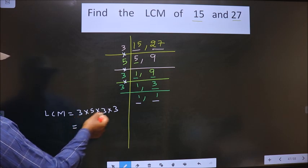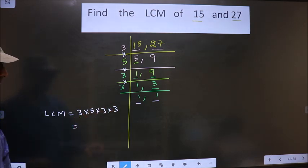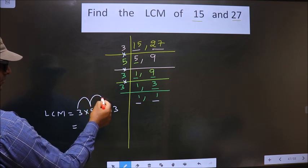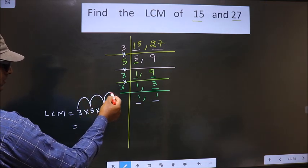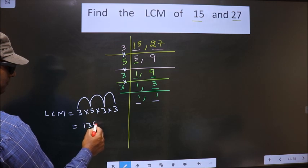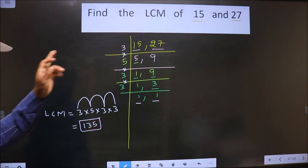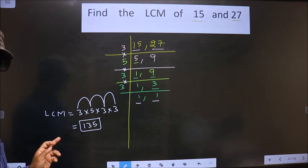So let us multiply all these numbers. 3 into 5 is 15. 15 into 3 is 45. 45 into 3 is 135. This is our answer. Am I clear?